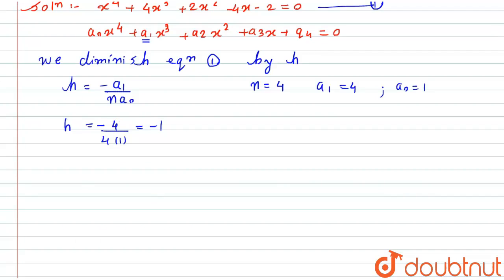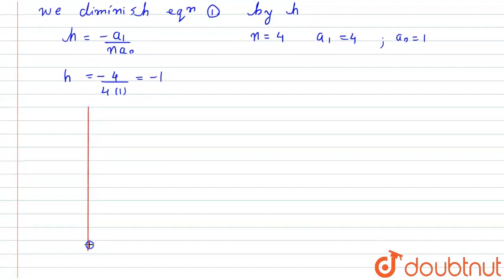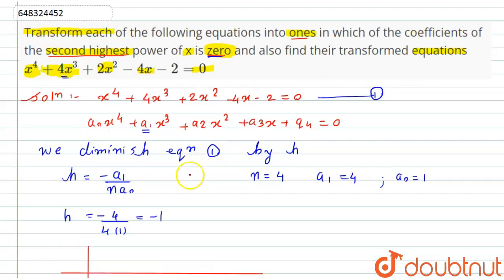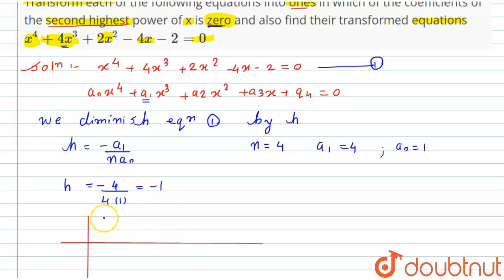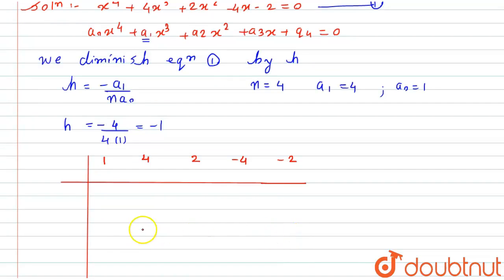To factorize this equation, we are going to use the factorizing algorithm. We write the coefficients of the equation: x⁴ has coefficient 1, x³ has coefficient 4, x² has coefficient 2, x has coefficient −4, and the constant is −2. We will apply the factor −1.